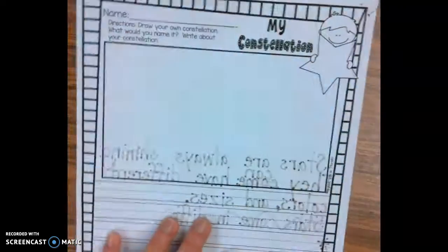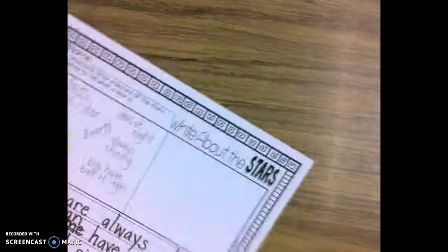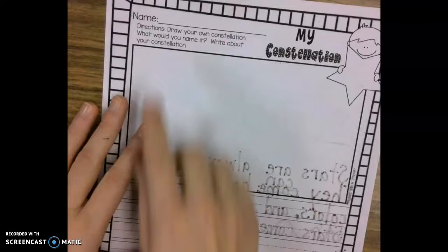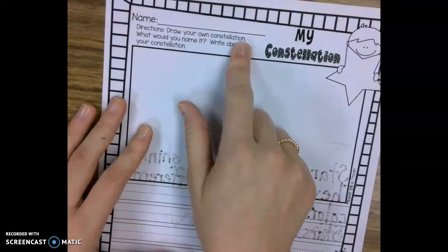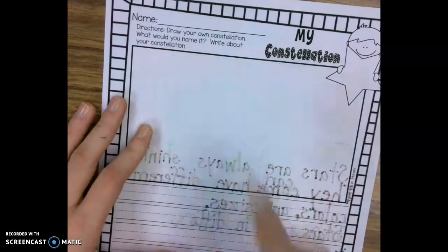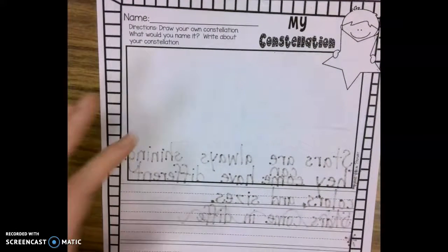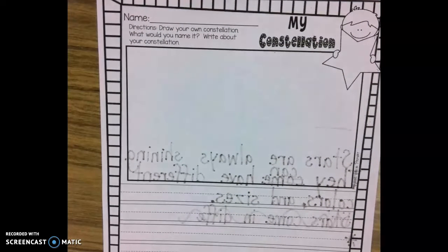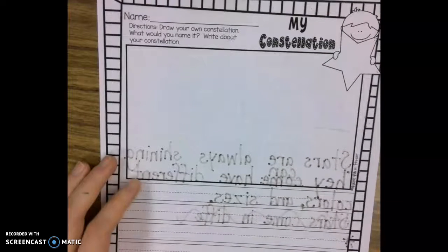Here is your last little activity for today. You can see my activity yesterday. It says, draw your own constellation. What would you name it? Write about your constellation. So, I think for me, the first thing I do, I would remember a constellation is a group of stars that makes a picture.